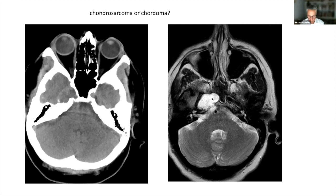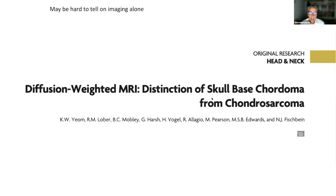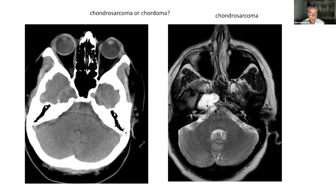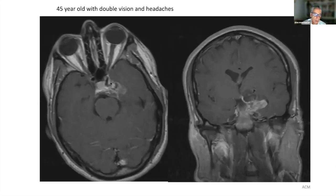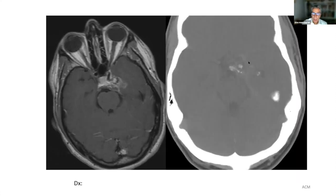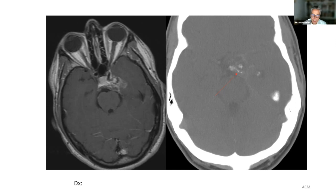This off-midline case with T2 prolongation proved to be a chondrosarcoma. These are often difficult to distinguish from chordomas. Some people say diffusion-weighted imaging can help. Here is a clival-based mass extending into the middle fossa. The reason to show this is it has what some call ringlet-like calcifications. Whenever you see amorphous calcifications in a clival mass, you should be thinking more of chondrosarcoma than chordoma — intrinsic calcifications are much less common in chordoma.